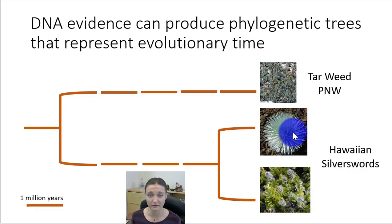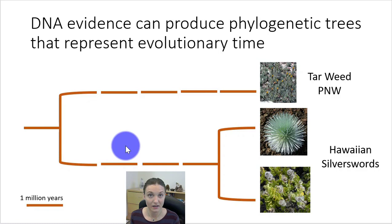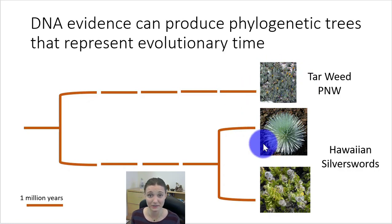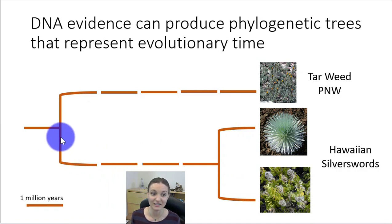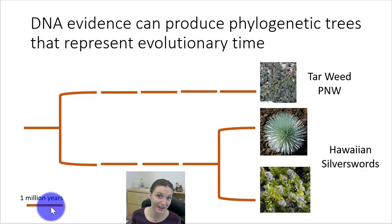Here we have two species of silverswords — plants found in Hawaii — and the tarweed, found in the Pacific Northwest. Using a molecular clock, we were able to determine that the tarweed is most closely related to these silverswords, and that the split between tarweeds and Hawaiian silverswords happened about five million years ago, while these two silversword species split about one million years ago. Some phylogenies include a time scale — if they are scaled to time, that means molecular clocks were used.